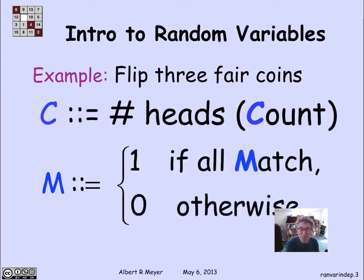Another variable is a 0,1-valued random variable that signals 1 if all three coins match in what they come up with, and 0 if they don't match.